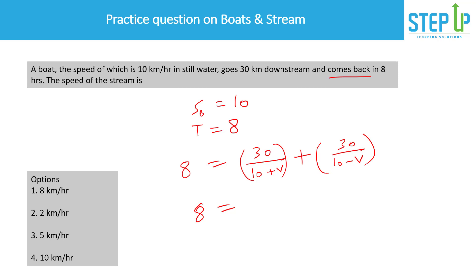We can solve by options. Option 10 km/h is impossible — it gives 10 − 10 = 0 in the denominator, making time infinite, so that's eliminated. Let's try v = 5 km/h: 30/(10 + 5) = 30/15 = 2 hours, and 30/(10 − 5) = 30/5 = 6 hours; total = 2 + 6 = 8 hours. That matches! So the speed of the stream is 5 km/h.